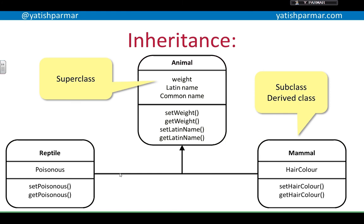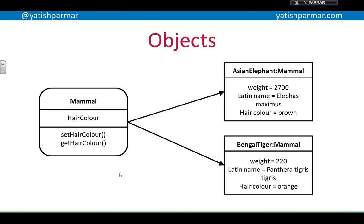Objects are things that are created from classes. So in Java, I would probably do something like this: Mammal AsianElephant equals new Mammal, and that will allow me to create an object called Asian elephant in my system, which I can then use in my program.